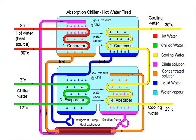The first step is the generator. In the generator, the dilute solution of lithium bromide — lithium bromide plus water — moves in and is dropped onto a hot water coil. This compartment is called the generator because it generates water vapors.